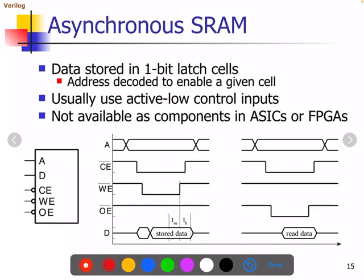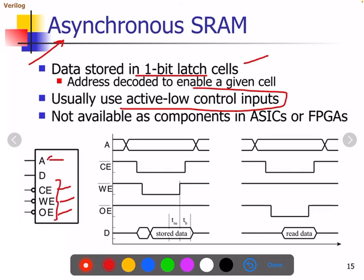Let us understand what asynchronous static RAM is all about. As the name itself suggests, asynchronous means there will be no clock signal available. Data will be stored in one-bit latch cells. Active low signals will be used for control inputs. You can see that chip enable, write enable, and output enable — these three pins are active low. A is address and D is data.